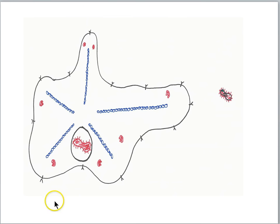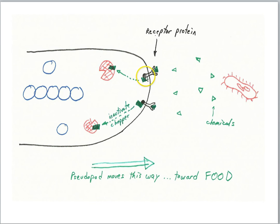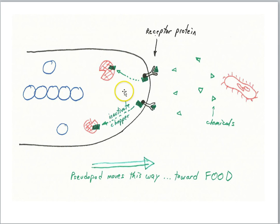Biologists suspect that the membrane receptors, upon detecting chemicals from the prey, are releasing a second messenger protein — another little piece of protein. That protein will float around in the cytoplasm in the pseudopod, and if it bumps into a chopper, it can bind to it and stop the activity of the chopper.